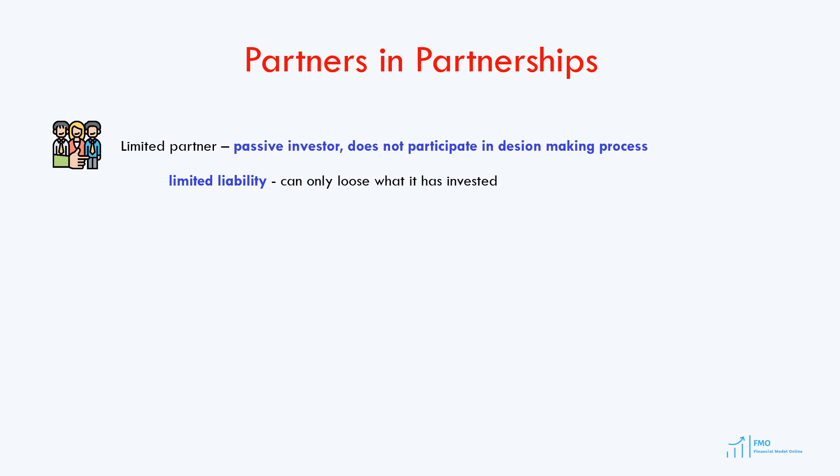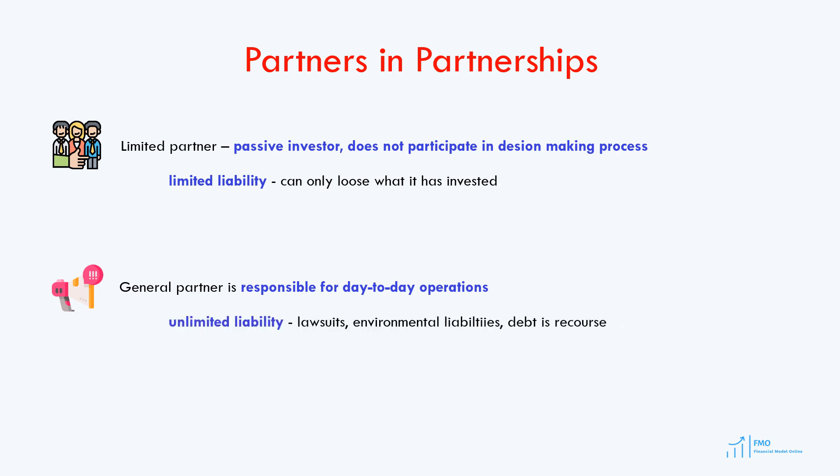Who is a general partner, then? A general partner in a partnership is a party which manages the partnership on a day-to-day basis. A general partner faces unlimited liability. So, if the partnership faces a big fine as a result of an environmental issue, this liability would pass through to the general partner, and the general partner would have to pay the fine.